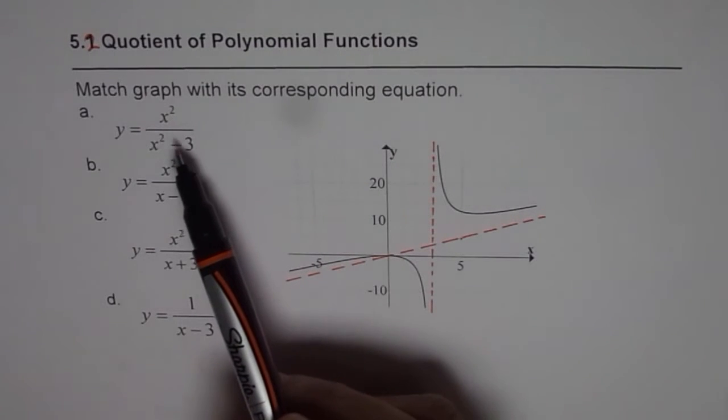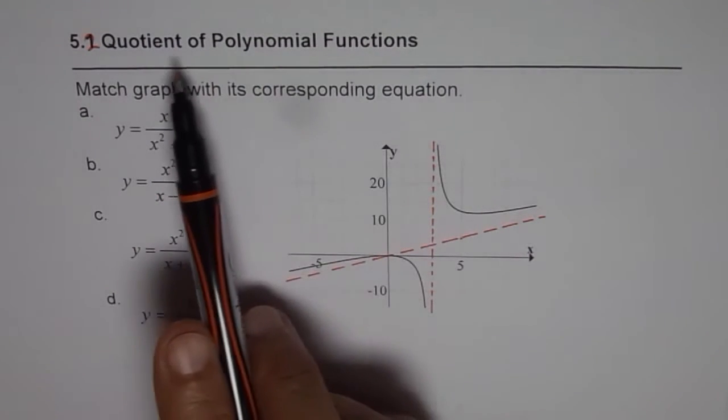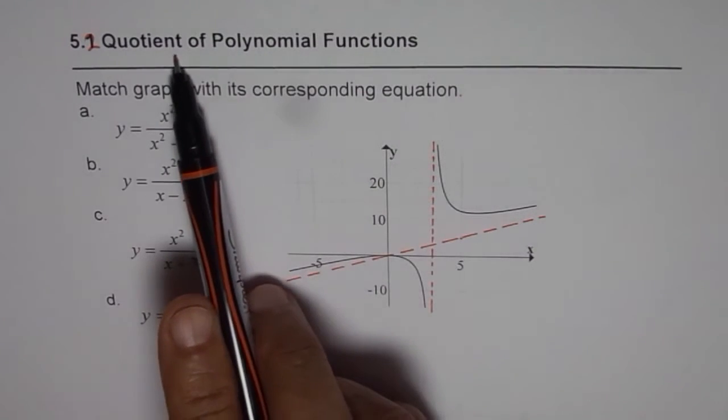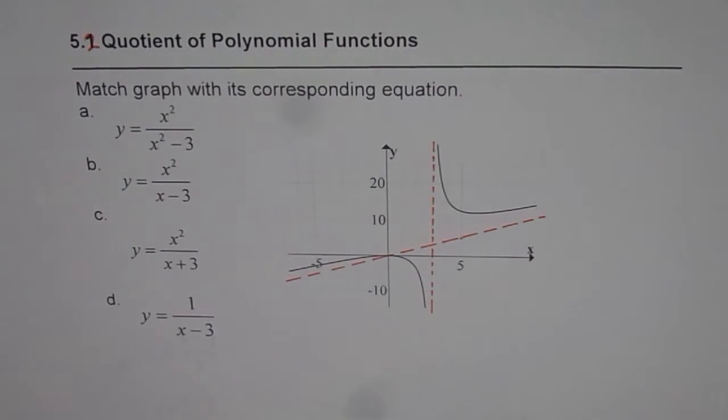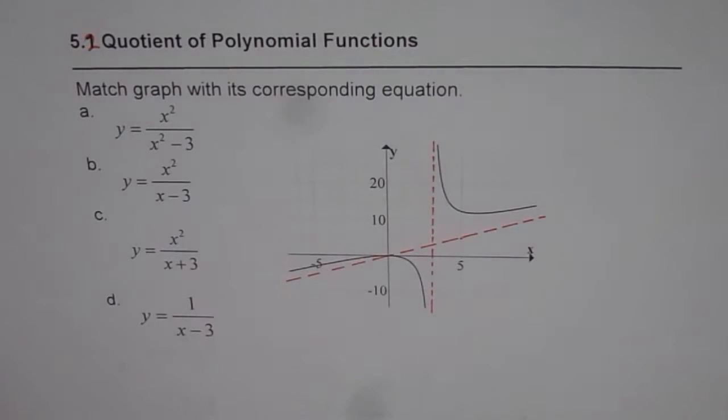Here we have a polynomial divided by polynomial, so it is a rational function and therefore we are writing quotient of polynomial functions. That is when we divide a polynomial by another polynomial. The question is, match graph with its corresponding equations. We have four equations and a graph.